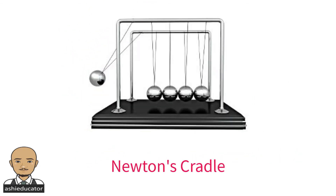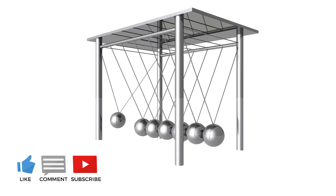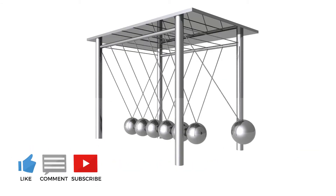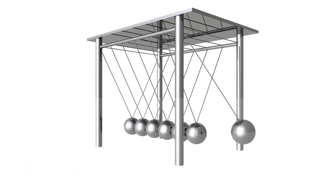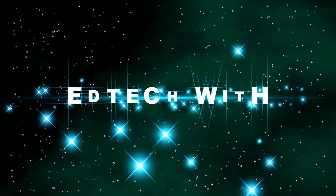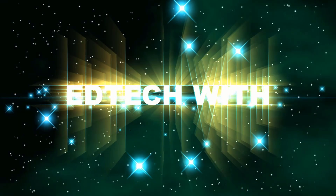Newton's ball, or Newton's cradle, named after Sir Isaac Newton, is a device that demonstrates conservation of momentum and energy. It is constructed from a series of pendulums, usually five in number, abutting one another. Each pendulum is attached to a frame by two strings of equal lengths, angled away from each other.